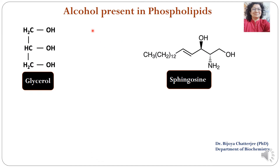First we will see about the alcohols that are present in phospholipids. Chiefly, the phospholipids have two alcohols. One is glycerol, which has three hydroxy groups, and the second one is sphingosine, which is an amino alcohol — it has a hydroxy group as well as an amino group.